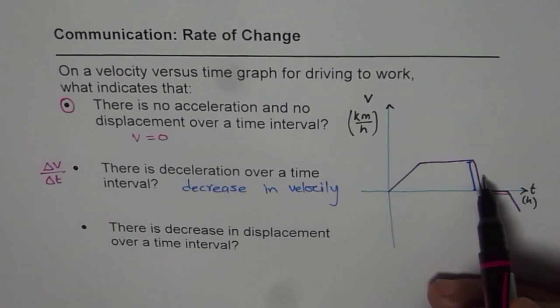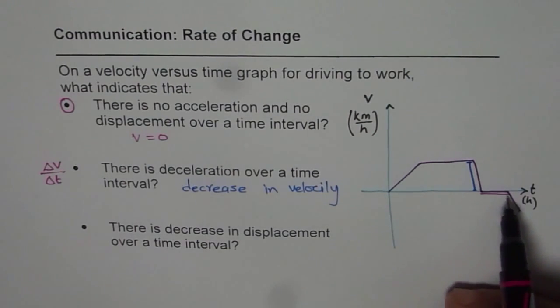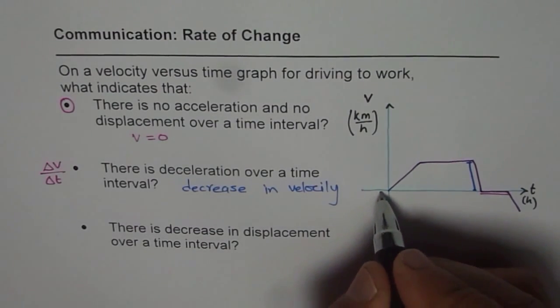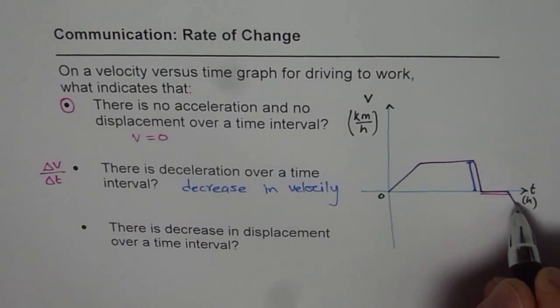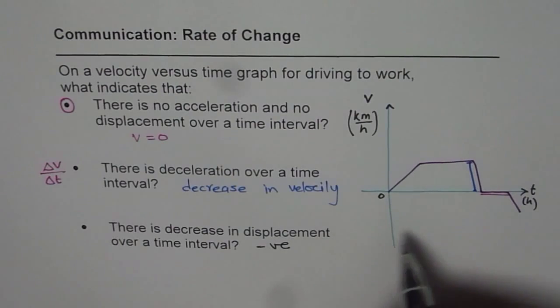But when the velocity is negative, then what happens? So here we have a zero, and in this portion, the velocity is negative. So negative velocity means that you are approaching. So distance is decreasing.